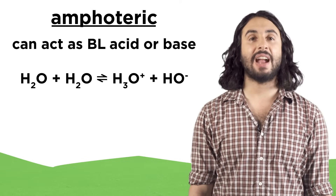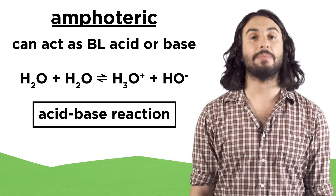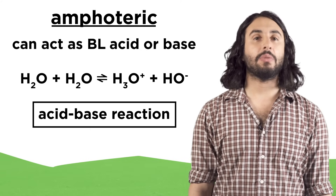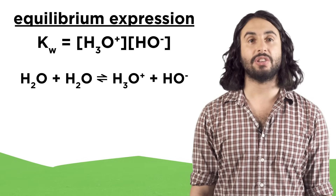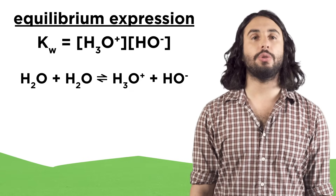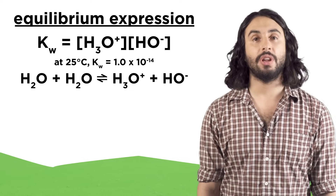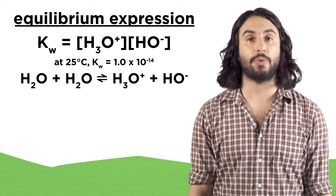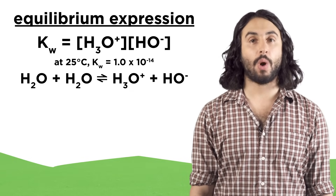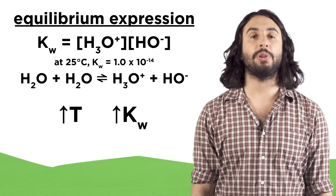Water is amphoteric because it can behave as an acid, losing a proton to become hydroxide, or it can act as a base, gaining a proton to become a hydronium ion. In a sample of water, a tiny fraction of molecules transfer a proton from one to another, which we call an acid-base reaction. This is an equilibrium, shown here. We can write an equilibrium expression by showing the concentrations of the products over the concentrations of the reactants. We will only include gases and aqueous substances, so here it will look like this. At room temperature this equals 1×10⁻¹⁴, or one one-hundred-trillionth — that's the fraction of water molecules that are ionized at any moment. As temperature increases, Kw increases.